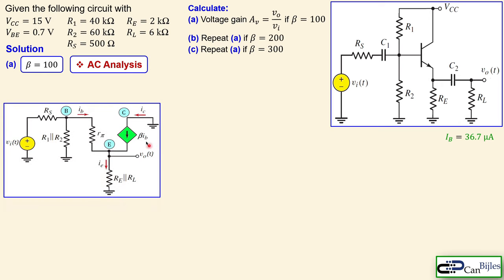Moving on to the AC analysis, we start with the AC or small signal circuit. The part shown in red is the small signal model of the BJT. You see Rπ between the base node and the emitter, and the dependent current source between collector and emitter with value beta times IB. In the AC analysis, capacitors are perfectly shorted and all DC quantities such as VCC are also shorted.